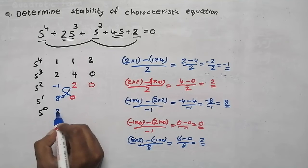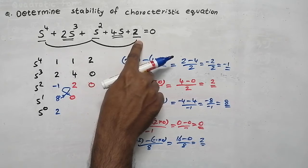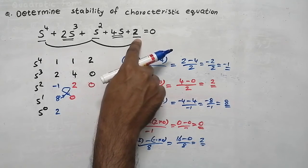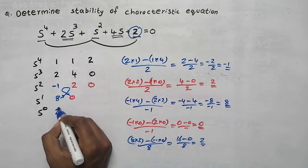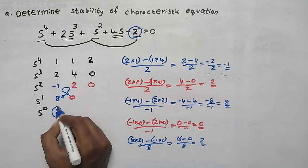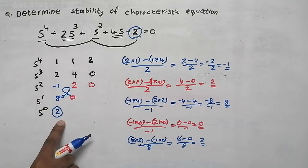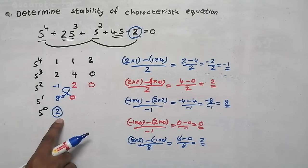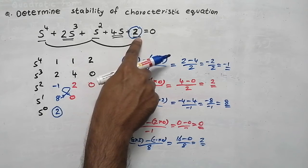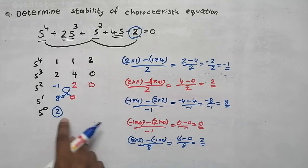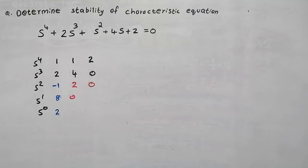We get the value 2. The last element of the characteristic equation is also 2. If the last element we solved and the last element of the characteristic equation are the same, then our answer is correct.